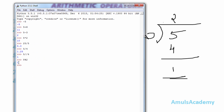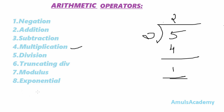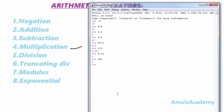The last one is exponential. If you want to find 2 to the power of 5, here 2 is called the base and 5 is called the exponent. To find the exponential of a value, you use the exponential operator — double star is used as the symbol. The result is 32. This covers all eight arithmetic operators in Python.